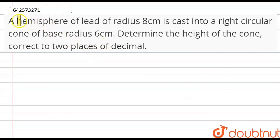Hello friends, the question is that the hemisphere of lead of radius 8 cm is casted into a right circular cone of base radius 6 cm. So we have to determine the height of the cone.